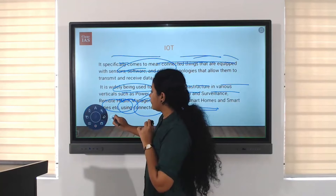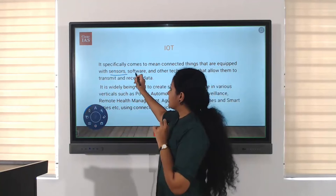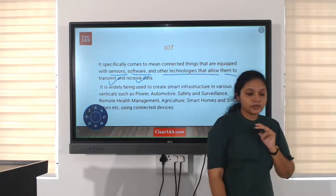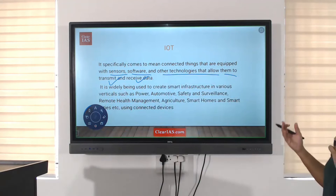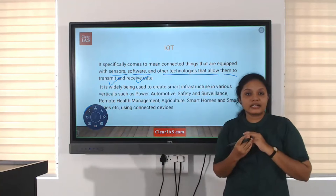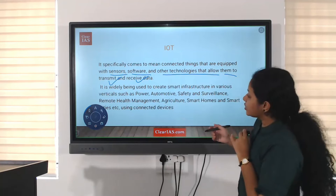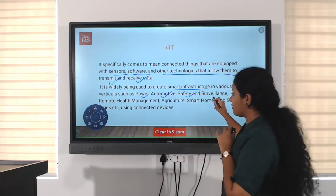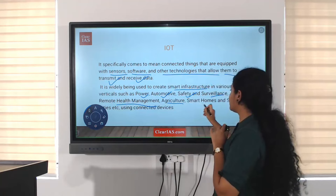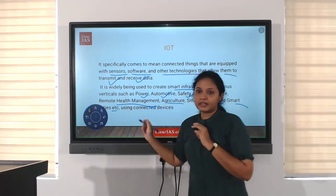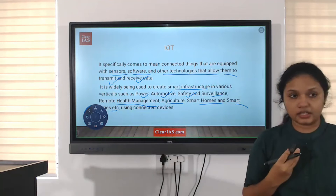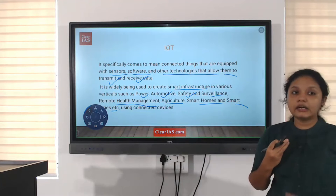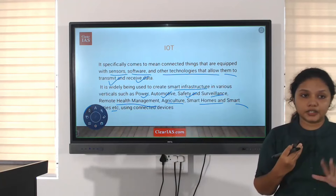IoT works with the help of sensors, software, and other technologies that allow devices to transmit and receive data. It is widely being used to create smart infrastructure like power, automotive, safety, surveillance, remote health management, agriculture, smart homes, and smart cities. There are a wide range of applications for IoT.